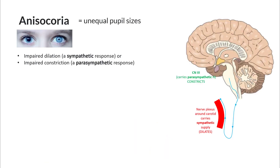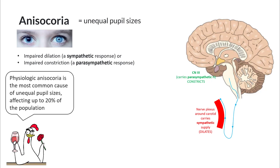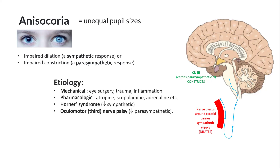Anisocoria refers to unequal pupil size and can happen if there is an impaired sympathetic or parasympathetic response. Physiological anisocoria is the most common cause, affecting up to 20% of the population, though the difference in pupil size is less than one millimeter. Once you have ruled out mechanical and pharmacological etiologies such as surgery, trauma, inflammation, and medication, the reason for unequal pupils is usually Horner's syndrome — decreased sympathetic supply — or third nerve palsy, which decreases parasympathetic supply.